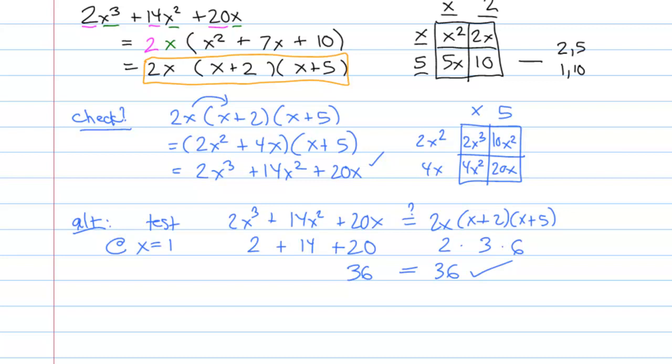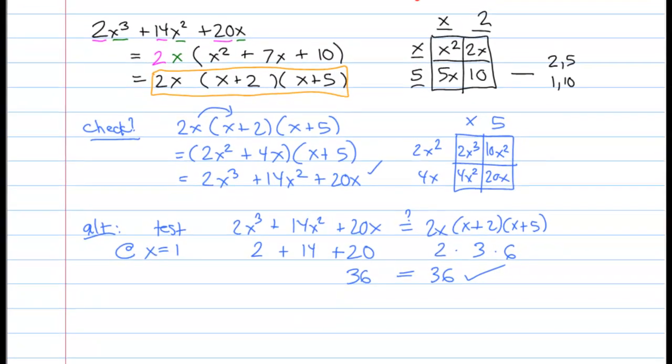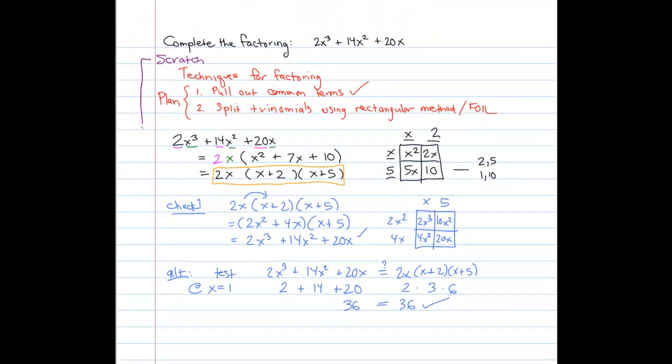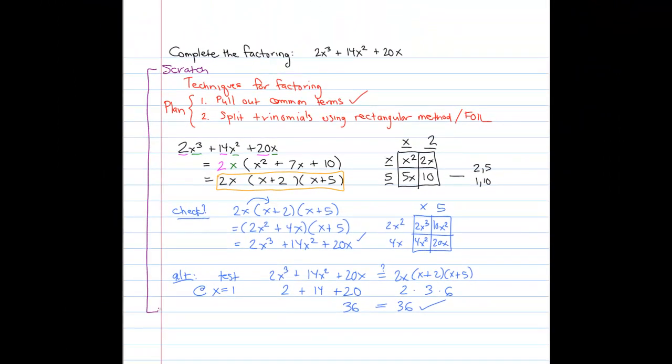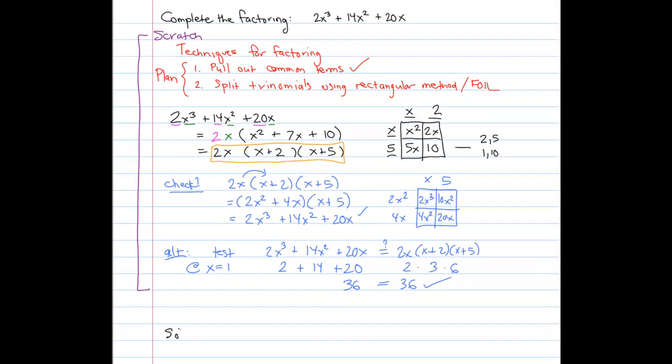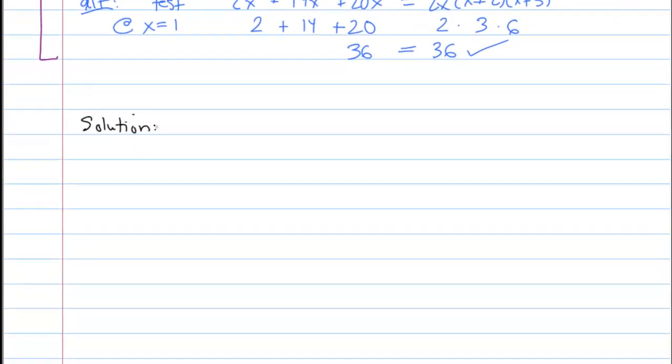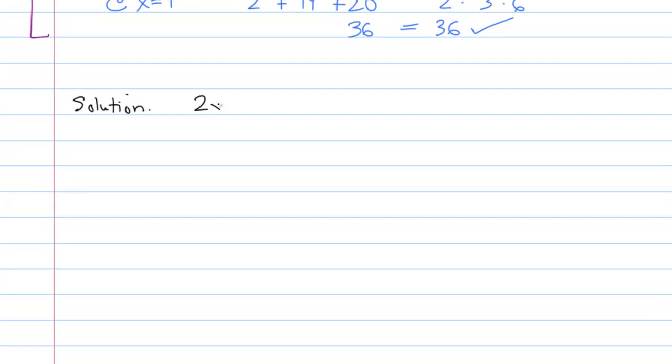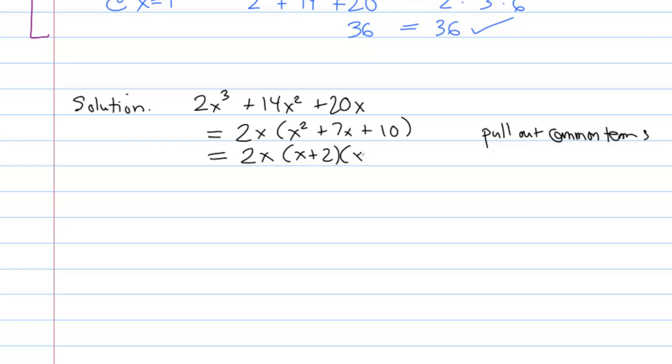Now it's worth pointing out that all of the work I've been doing here should really be thought of as scratch work. I was attempting to come up with a method for solving it and checking my answer. So for my final write-up, one where I can put all of my thoughts together cleanly, it might look something like this. 2x cubed plus 14x squared plus 20x is equal to 2x times x squared plus 7x plus 10 because I pulled out common terms. And this is equal to 2x times x plus 2 times x plus 5 by factoring the trinomial.